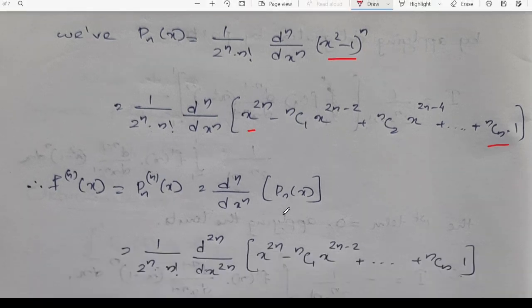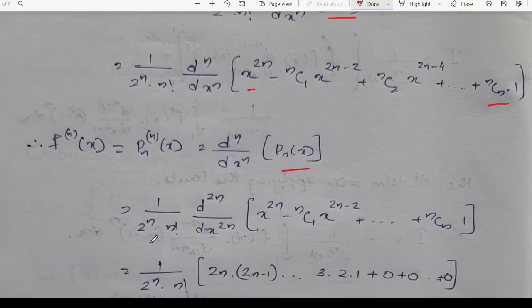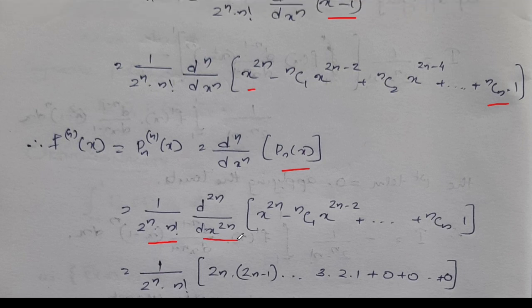That is d raised to n by dx raised to n of Pn of x. Now we need to differentiate n times, which means this term involves d raised to 2n into dx raised to 2n. When we differentiate 2n times, only the leading term survives; all lower-degree terms vanish and are equal to 0.